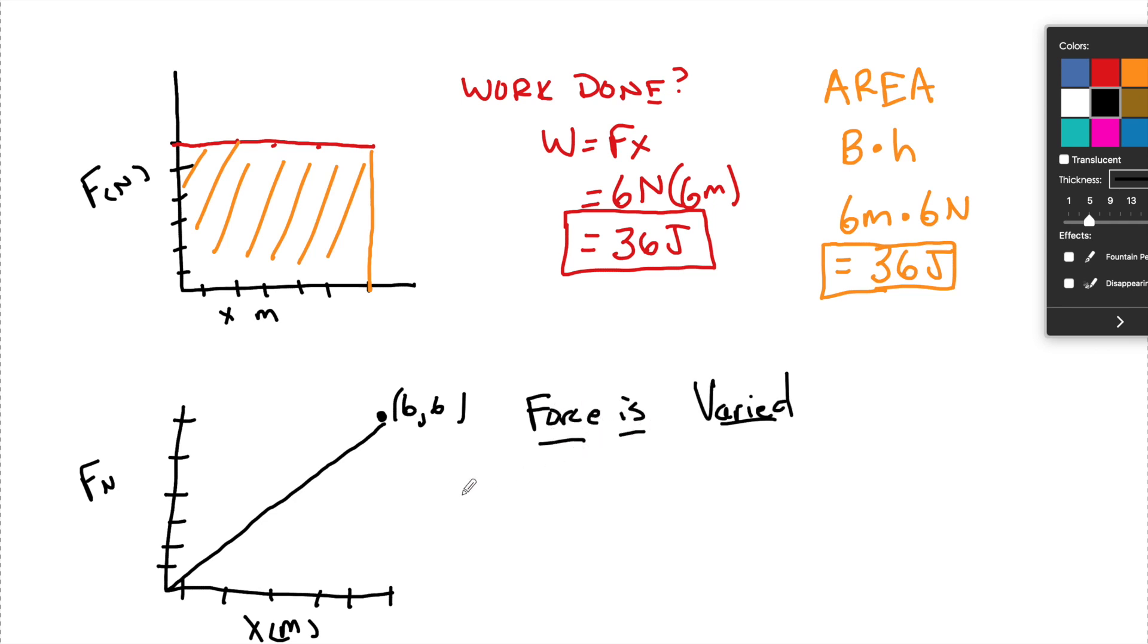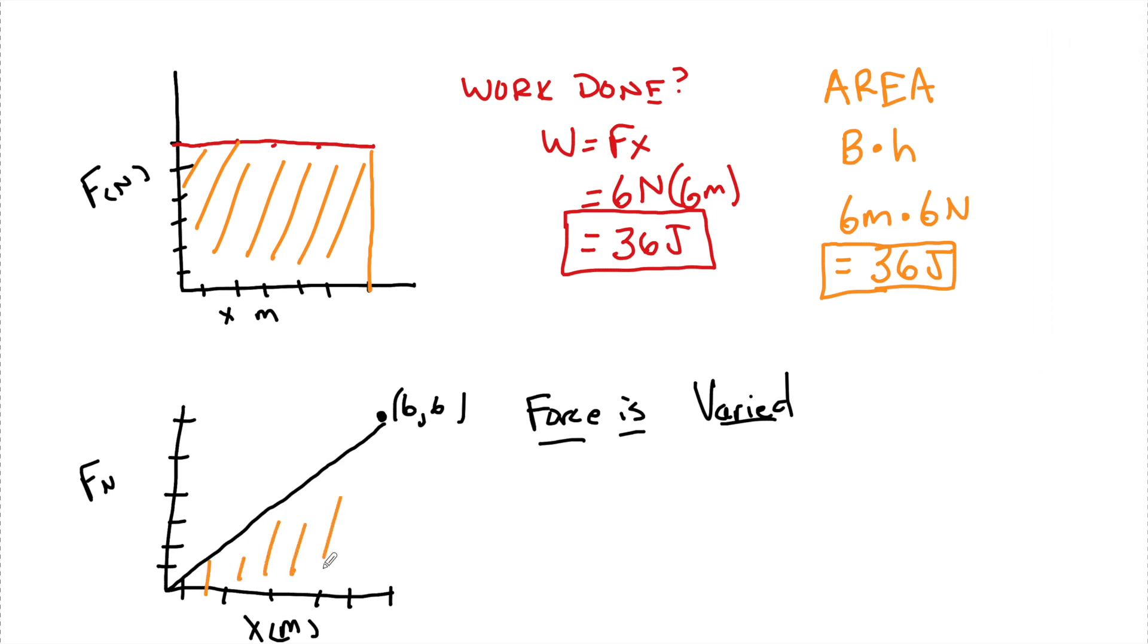The way we're going to do this is we are once again going to find the area under this curve, which we know is just a triangle. Let's say that that came right to the 6, not drawing to scale. Now we know the area under the curve is 1 half base times height, the area of a triangle. So 1 half times 6 times 6 equals 18 joules, and that's really it.